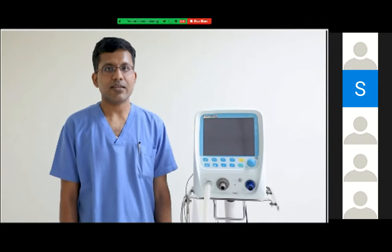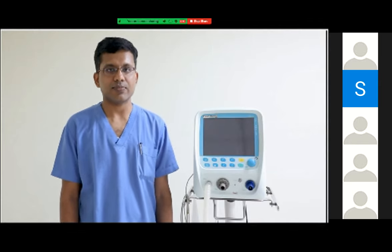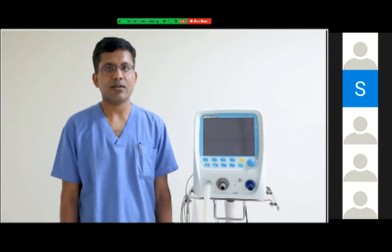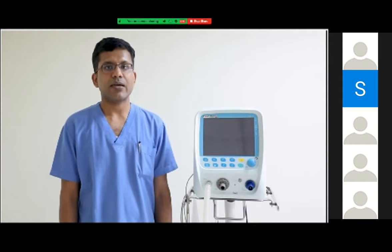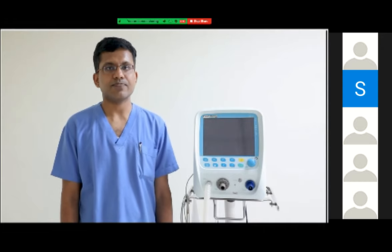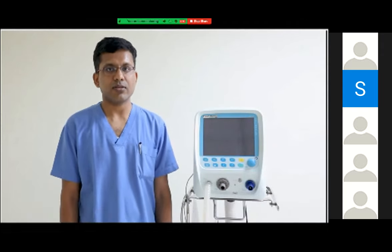Basically, a ventilator has four components: the inlets, which include gases and electricity; the inspiratory unit, where mixing of air happens and gases are delivered to the patient; the expiratory component, where exhaled gases are collected; and an assembly which senses pressures and oxygen. I will show you all these components in the following demonstration.